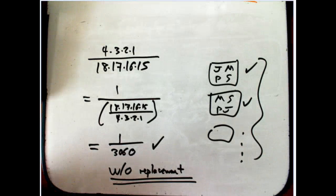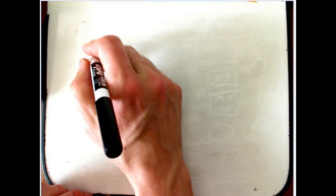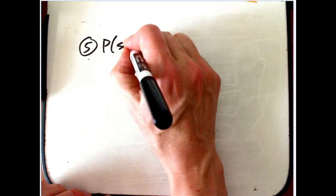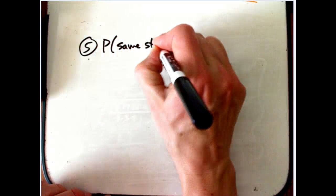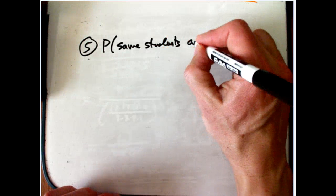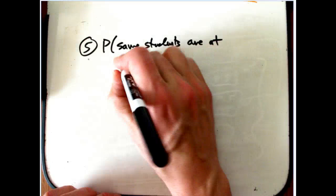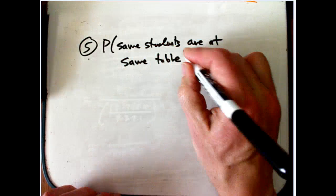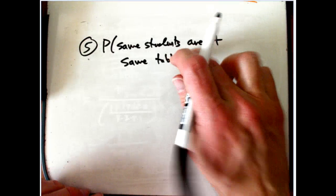One more. Don't want to make this super long. This still isn't what people usually remark about in my class when you're picking tables. It's really this. What's the probability that the same students are at the same table?